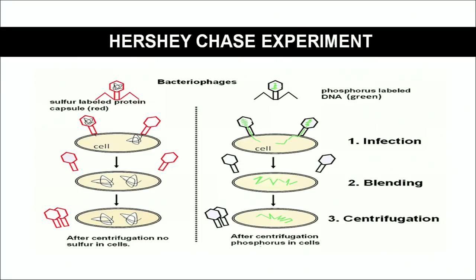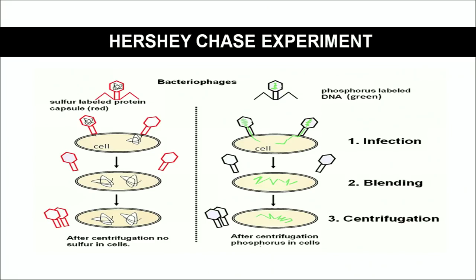Hershey grew those bacteriophages on a medium containing radioactive phosphorus. He used radioactive sulfur and radioactive phosphorus because proteins are made up of carbon, hydrogen, oxygen, nitrogen, and some amino acids like methionine contain sulfur. Sulfur is not found in DNA, but is found in some proteins. In the other set, he grew bacteriophages on a medium containing radioactive phosphorus, because phosphorus is not found in proteins — phosphorus is a component of DNA. When the phage grown on radioactive sulfur and phosphorus was used to infect the bacterium, the genetic material was supposed to move into the cell.